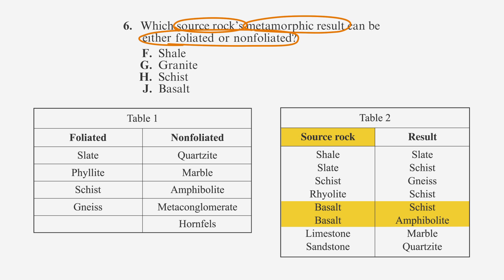Now let's look for schist and amphibolite in table one. Schist is shown in the foliated column, and amphibolite is shown in the non-foliated column. So we can conclude that the source rock, basalt, results in both a foliated and non-foliated rock. So choice J, basalt, is our answer.